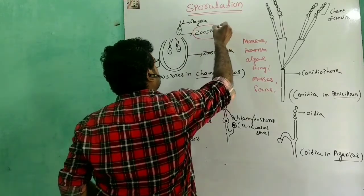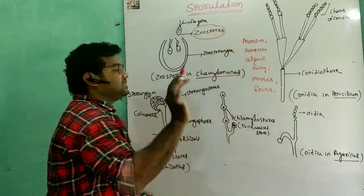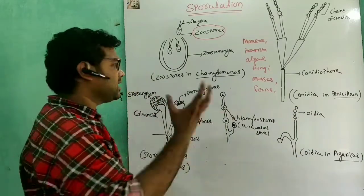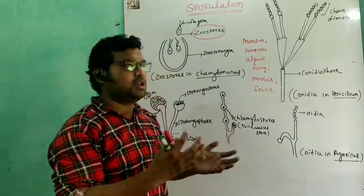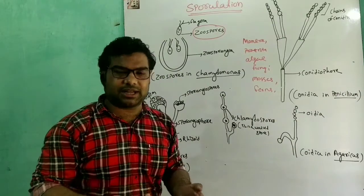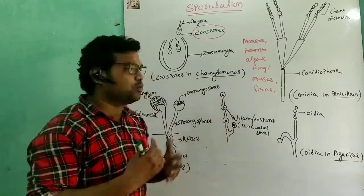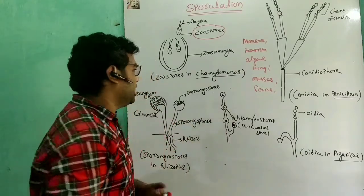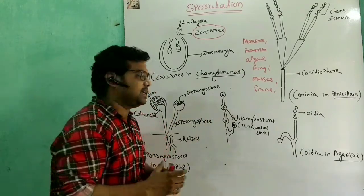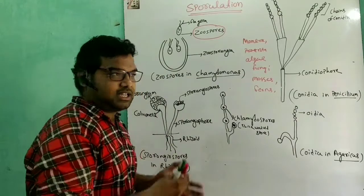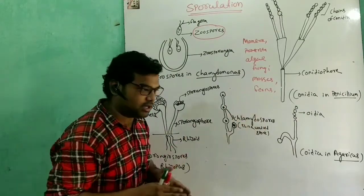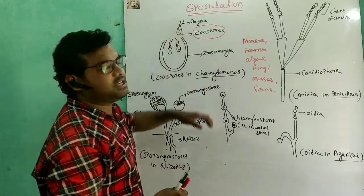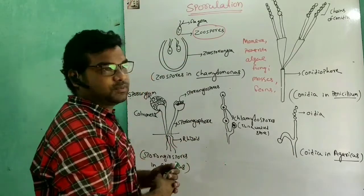Motile spores are found in aquatic organisms, for example algae. These spores bear flagella for traveling. Flagella-bearing spores are known as motile spores.